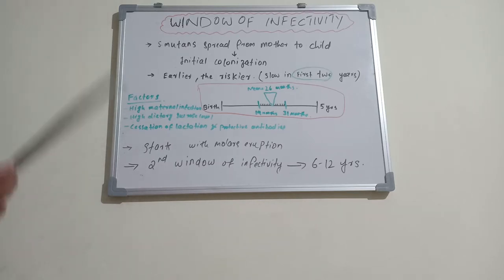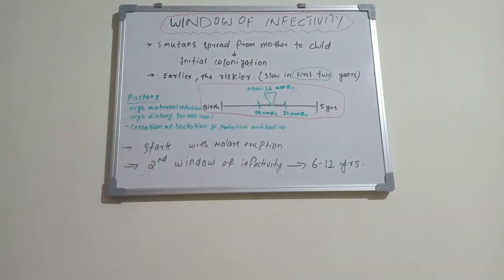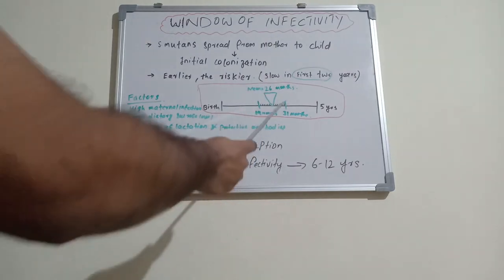When the baby is born, there is no bacteria in the baby's mouth. The baby gets bacteria from the mother or the first caregiver or primary caregiver. So the baby gets bacteria and its initial colonization starts during this period, exactly during 19 to 31 months. This is an idealistic condition; it can vary.